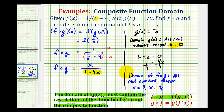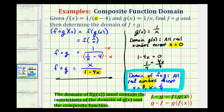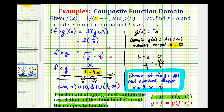This would be the correct domain of our composite function. If we want to express this using interval notation, we draw a number line, exclude zero and one fourth with open points, and graph every other real number — to the right, in between, and to the left. Using interval notation, we'd have three intervals: from negative infinity to zero, union from zero to one fourth, union from one fourth to positive infinity. There's more than one way to express the domain of a function — here we have it in words, here we have the graph, as well as interval notation.